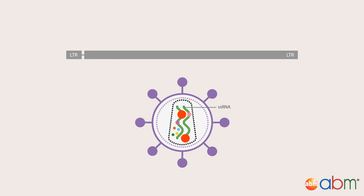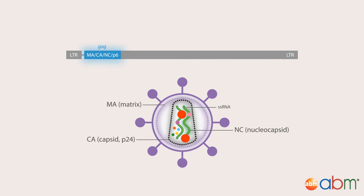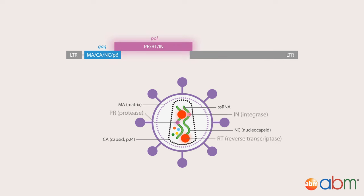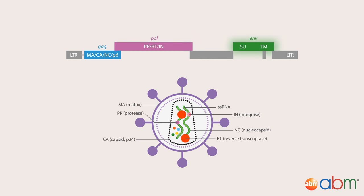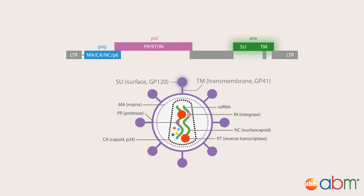GAG, POL, and ENV. The GAG gene encodes protective core and matrix proteins for viral assembly and infection. The POL gene encodes for reverse transcriptase, RNase H, and integrase — enzymes crucial for reverse transcription and genomic integration. The ENV gene encodes for surface glycoproteins that determine tropism and enable entry into the cell.